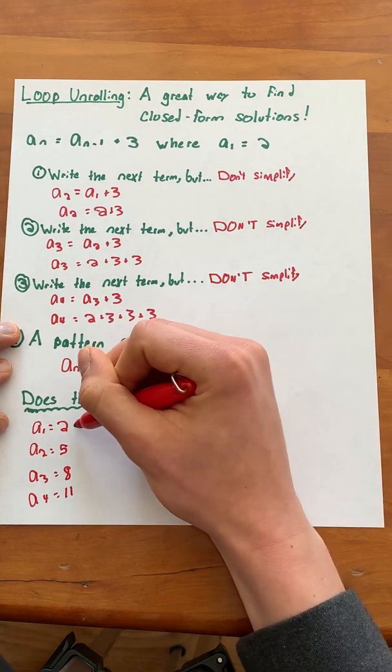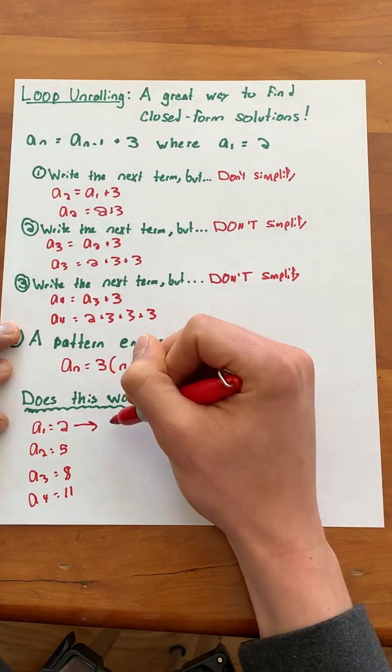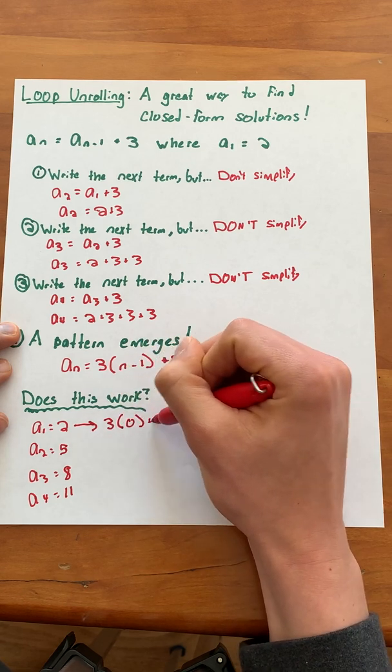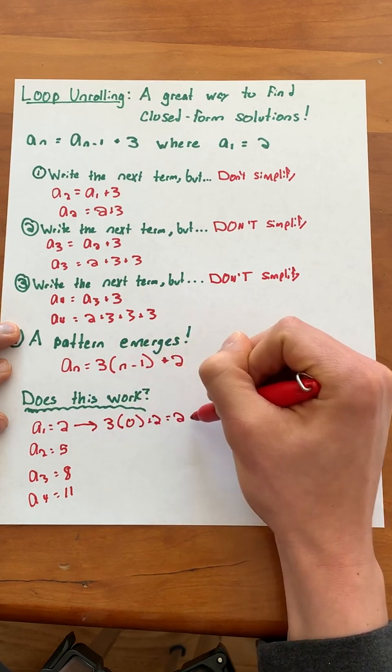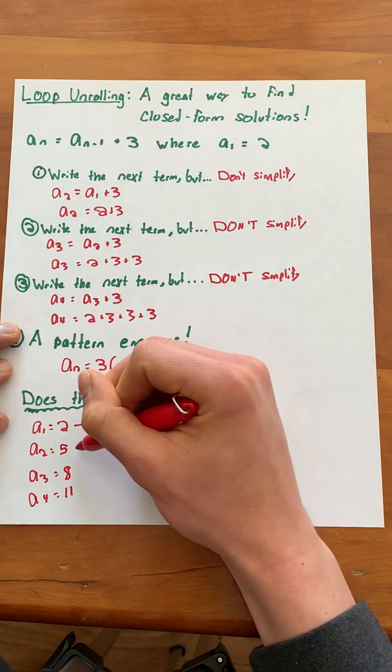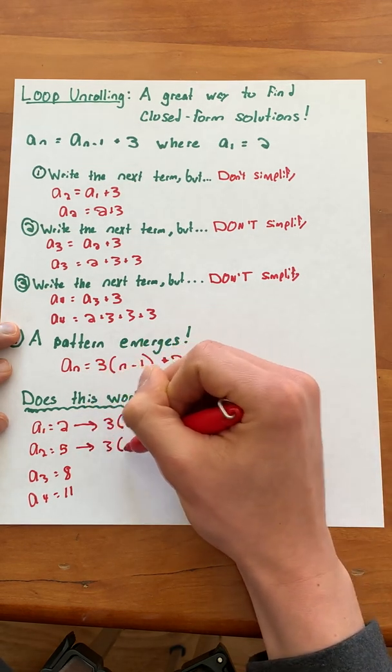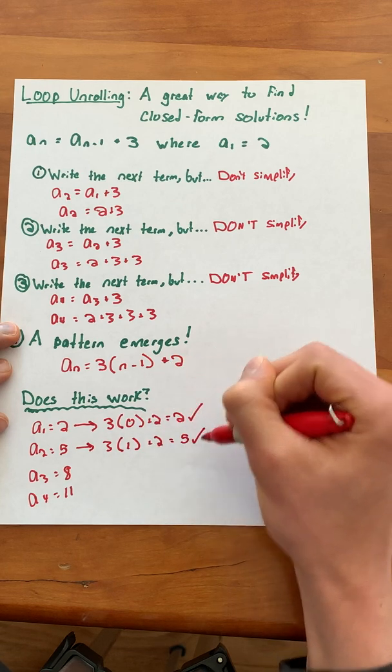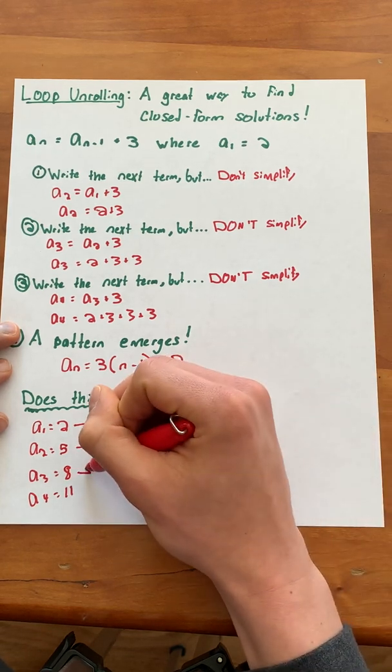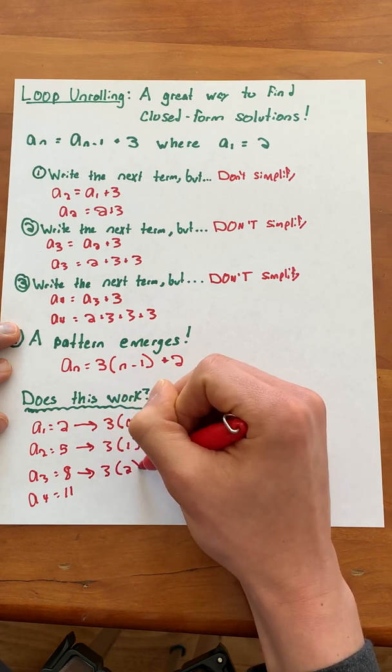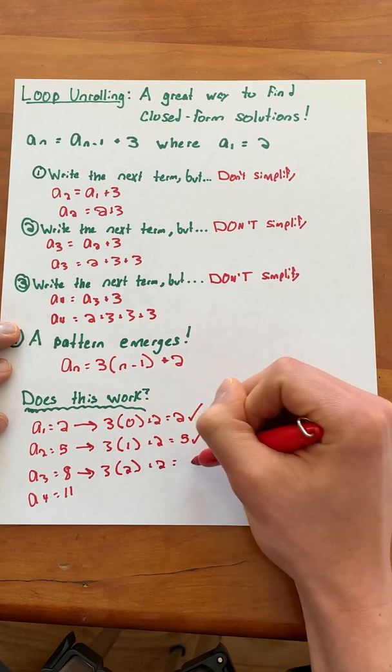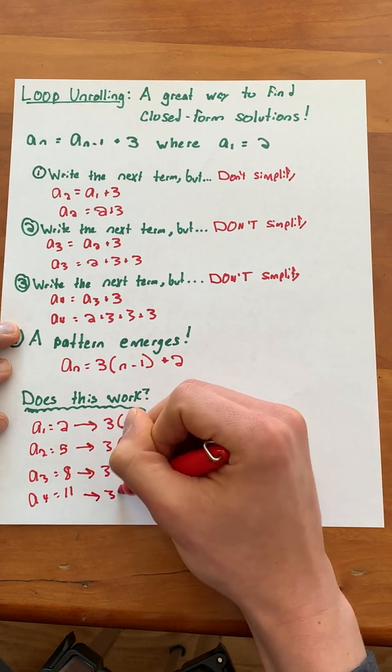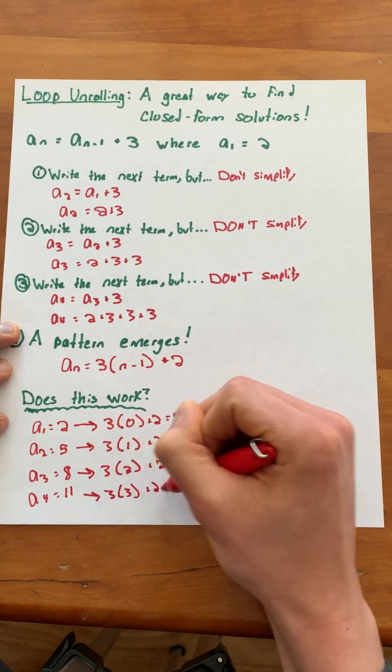Now let's see if this works with our solution. So in our solution we would get 3 times 0 plus 2 which equals 2. That works. With a of 2 we would get 3 times 1 plus 2 which equals 5, which also works. This follows for the next few terms as well. We get 3 times 2 plus 2 which equals 8, and we get 3 times 3 plus 2 which equals 11.